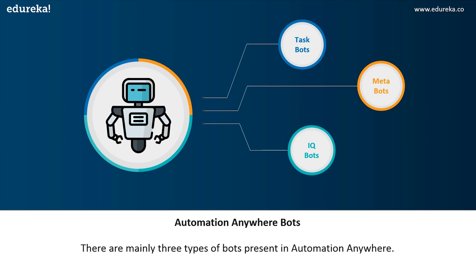The third type of bots are IQ bots — the next generation intelligent bots that allow developers to add cognitive capabilities to the process. These bots use cognitive capabilities to extract information from semi-structured or unstructured data. IQ bots also learn to detect patterns so that the next time a pattern is encountered, the bot knows exactly what has to be done. Since this session focuses on IQ bots, we'll only be covering IQ bots in detail.